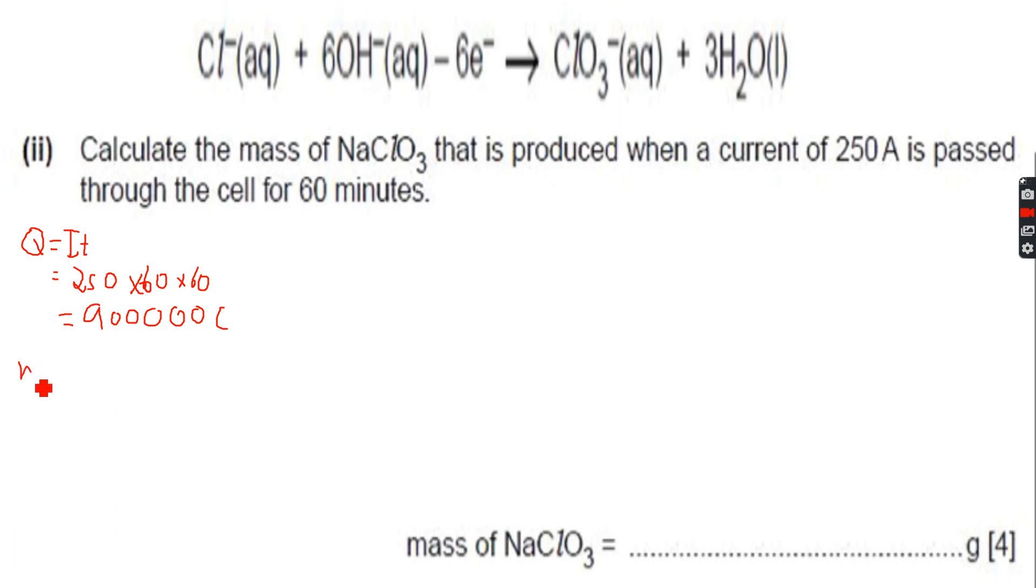Now let's calculate the number of moles of electrons. We have Q, we know F as 96,500. So we know that N equals Q over F, so it would be 900,000 over 96,500, which equals 9.33 moles, correct to three significant figures.